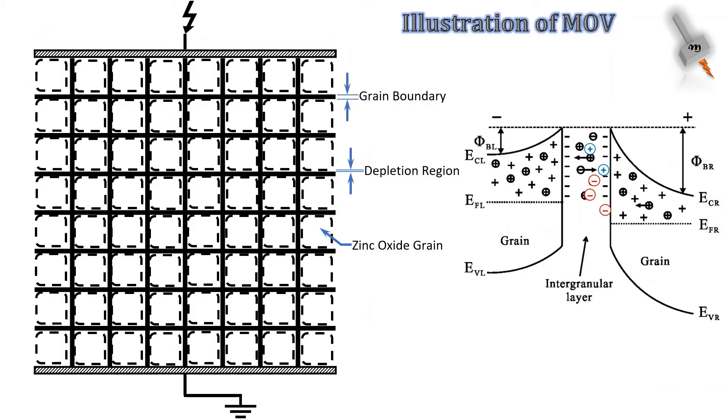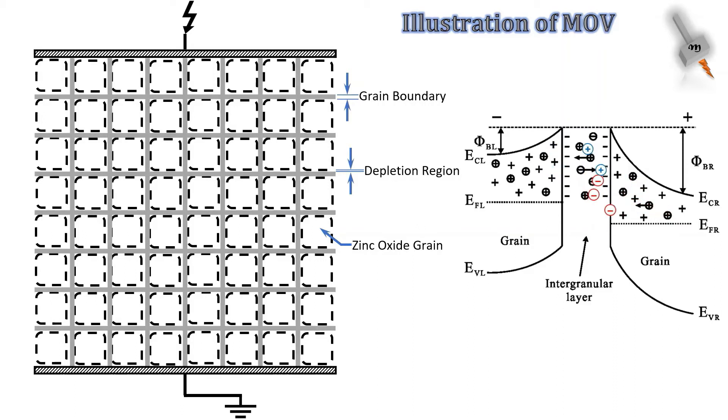When voltage is applied to a Surge Arrester, it ultimately gets applied on the MOV. Due to this applied voltage on MOV, the grain boundary experiences charge accumulation and slowly the charge starts crossing the grain boundary. As the applied voltage further increases, more and more charge starts crossing the grain boundary and hence there is an increase in current flowing through the MOV.